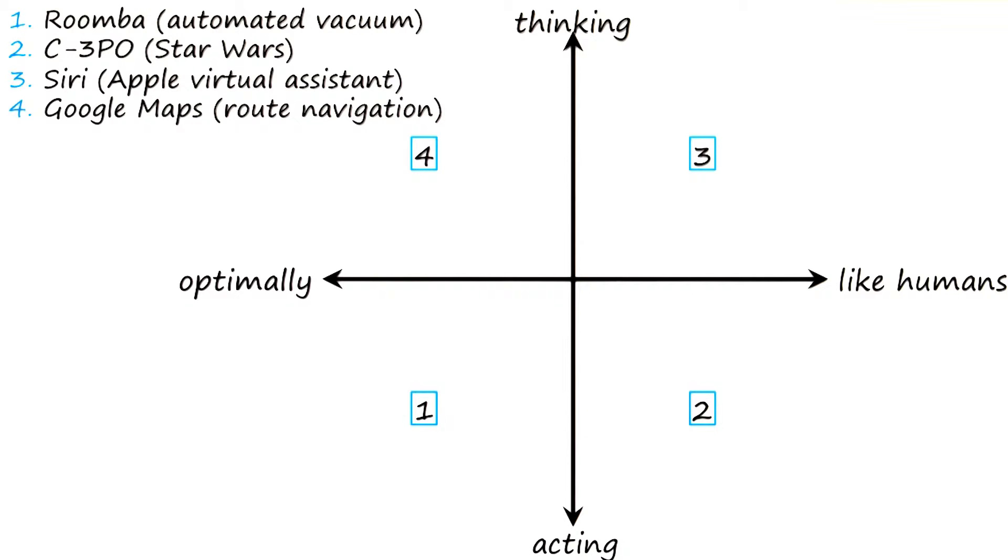Google Maps plots your route from your origin to your destination. So it's definitely doing thinking. It's not doing any acting in the world. But we really don't care if it does the route planning like we would do it. So we would say it does its route planning optimally. It takes into consideration traffic, current construction, and different things like that, whereas we would probably think of the routes we've taken in the past. So Google Maps thinks optimally.